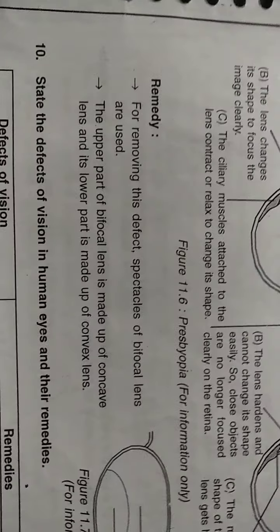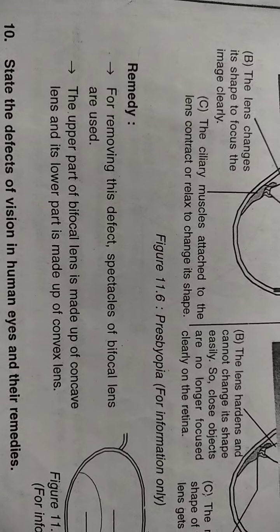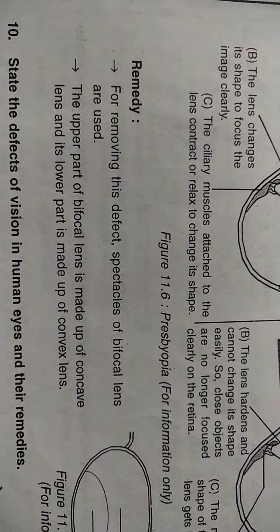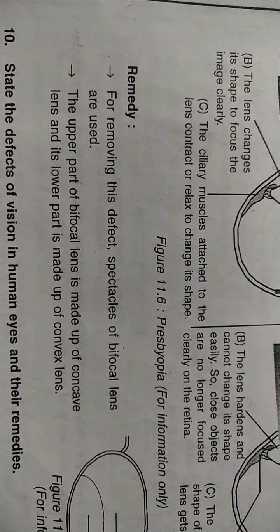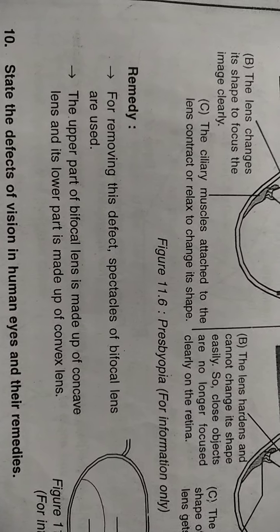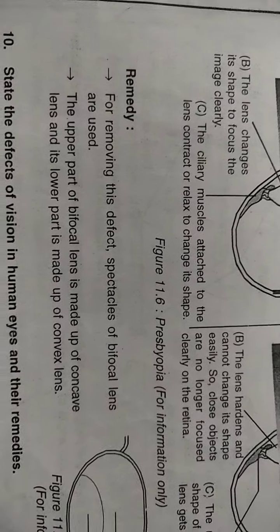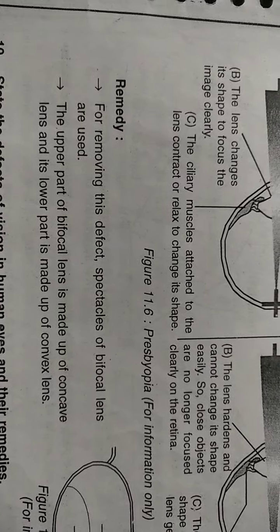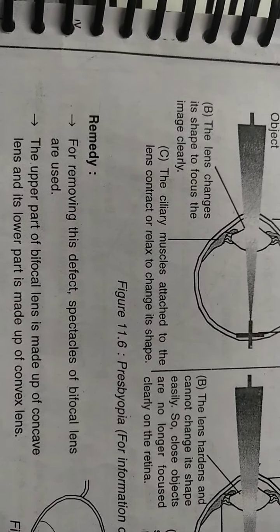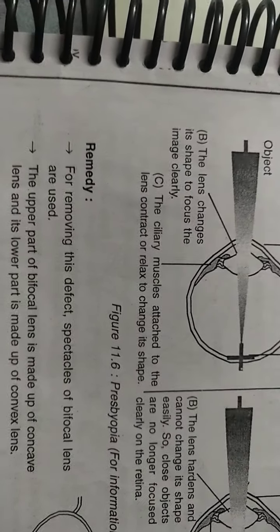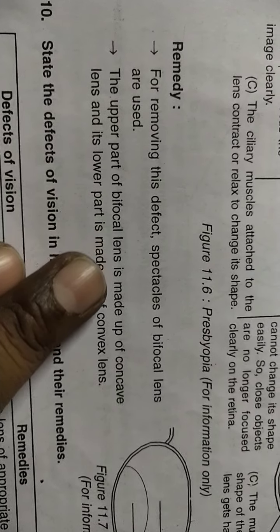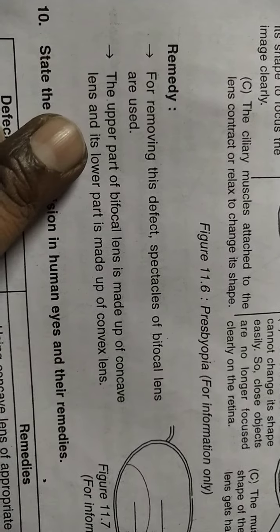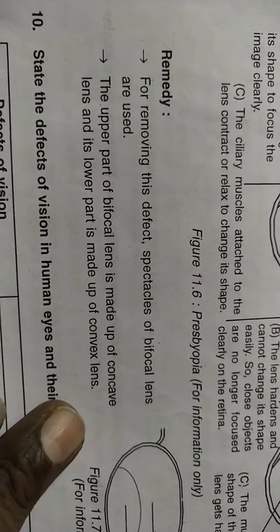You might have seen a line in the middle of the glasses of old-aged persons — above and below that line are two types of glass. When seeing distant objects, they tilt the spectacles down slightly to look through the upper (concave) part. When seeing nearby objects, they keep the spectacles fitted in front of the eyes and look through the lower (convex) portion.